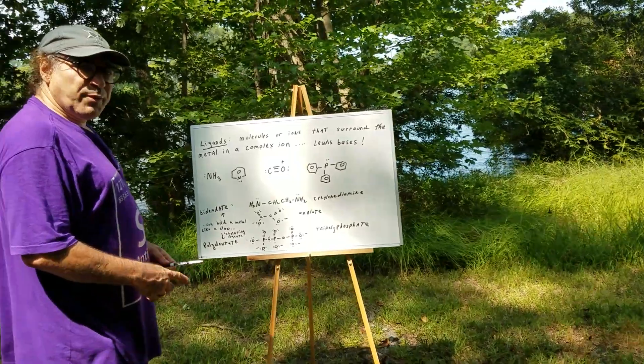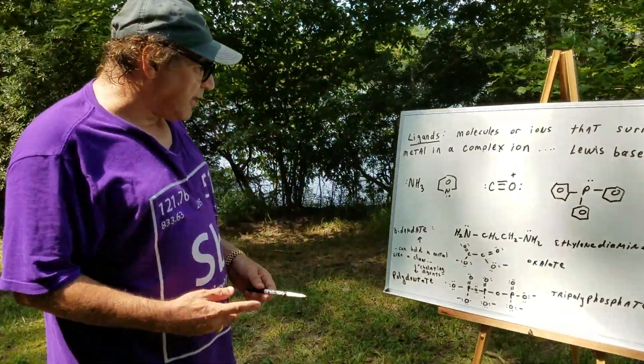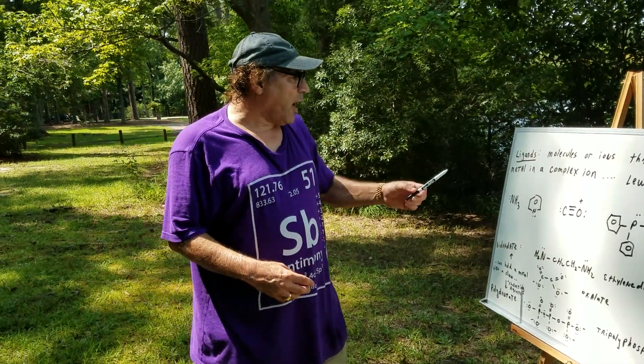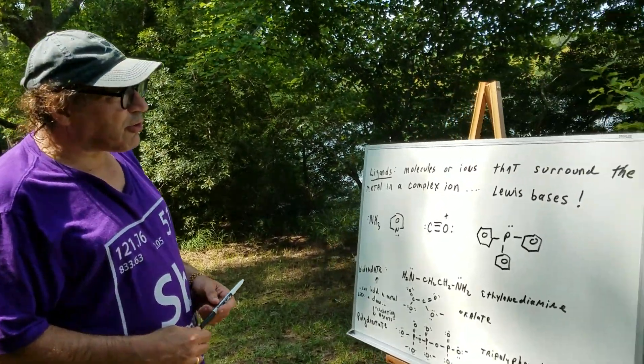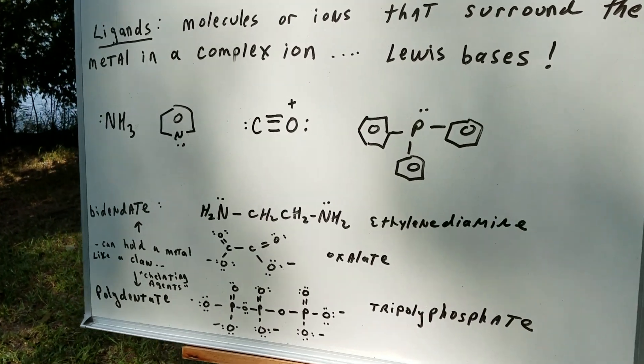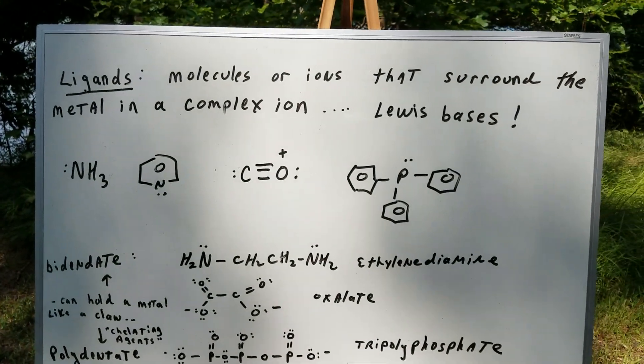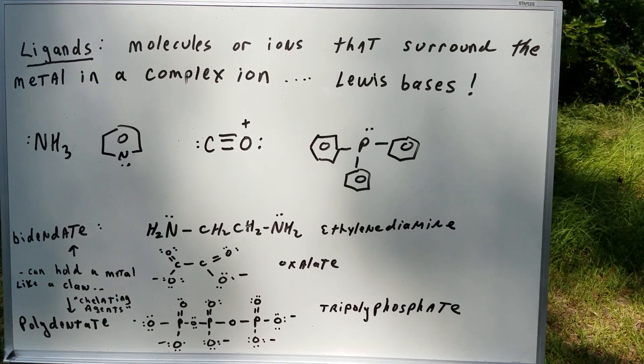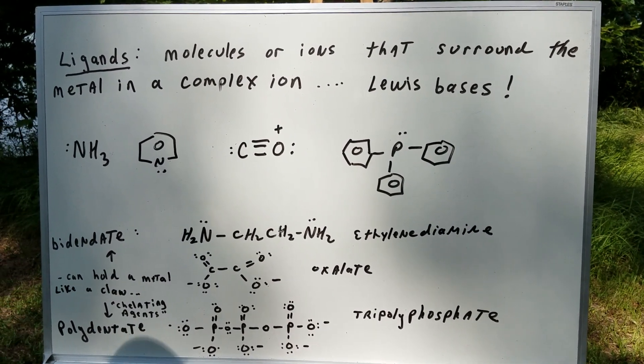I want to take a look at something we haven't really done a video on and I'm gonna do some more videos on something called complex ions. Here a ligand is a molecule or an ion that surrounds the metal in a complex ion. So any molecule or ion that surrounds the metal in a complex ion is a ligand. Ligands are Lewis bases.